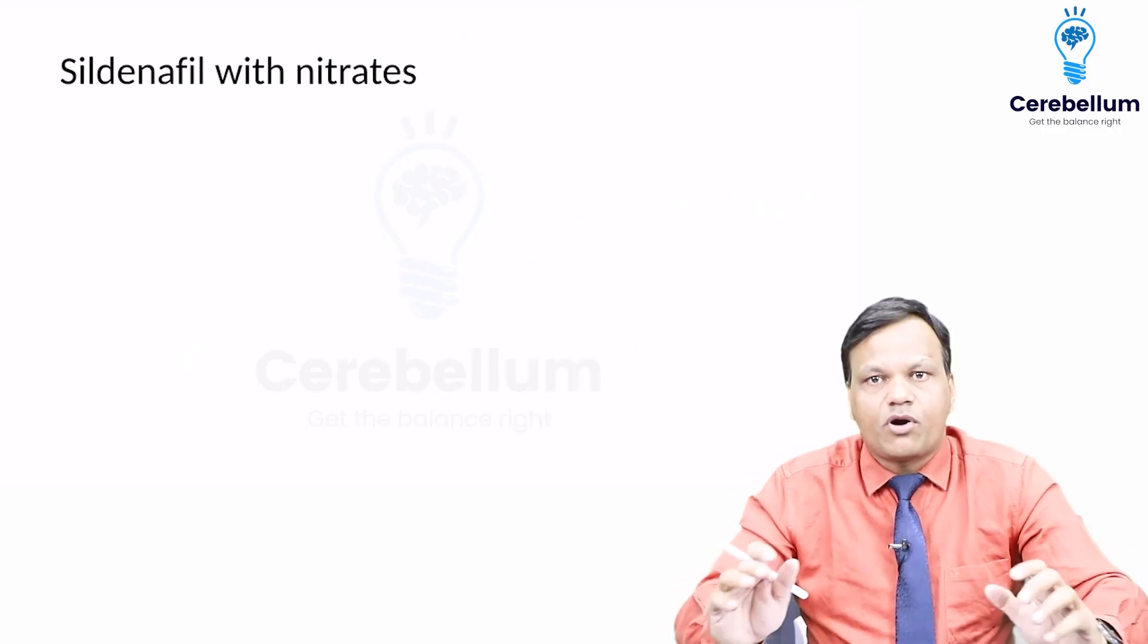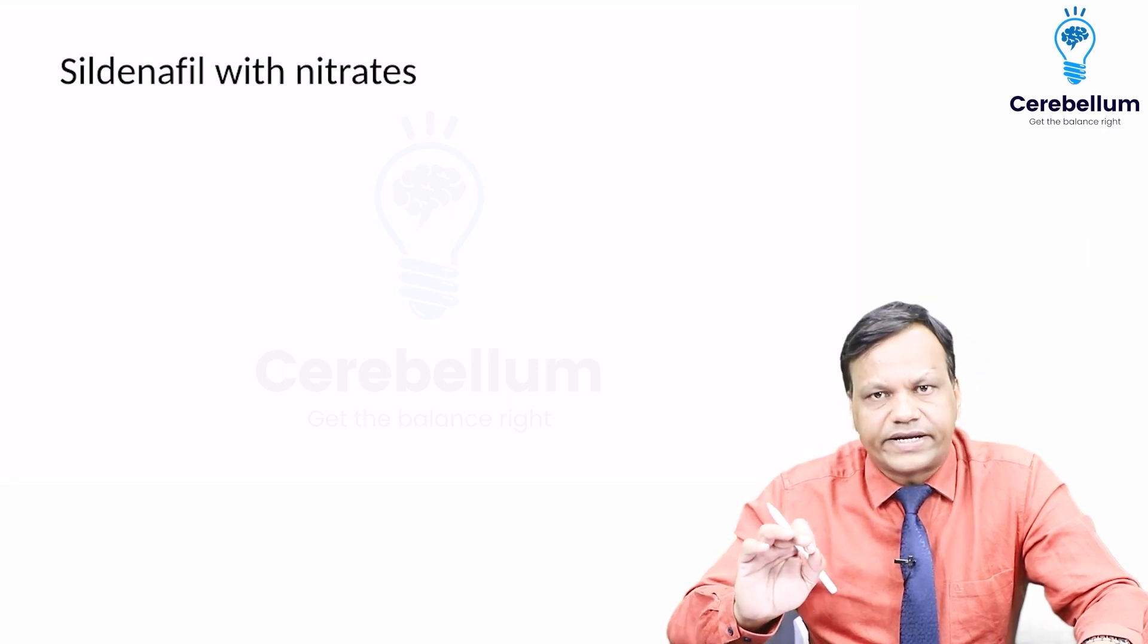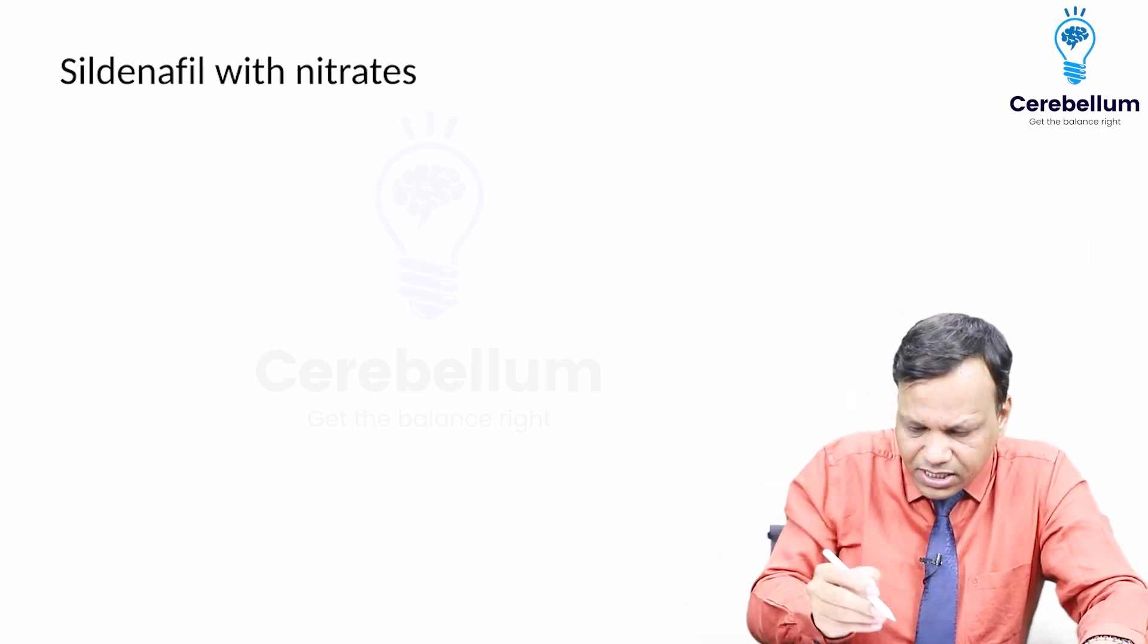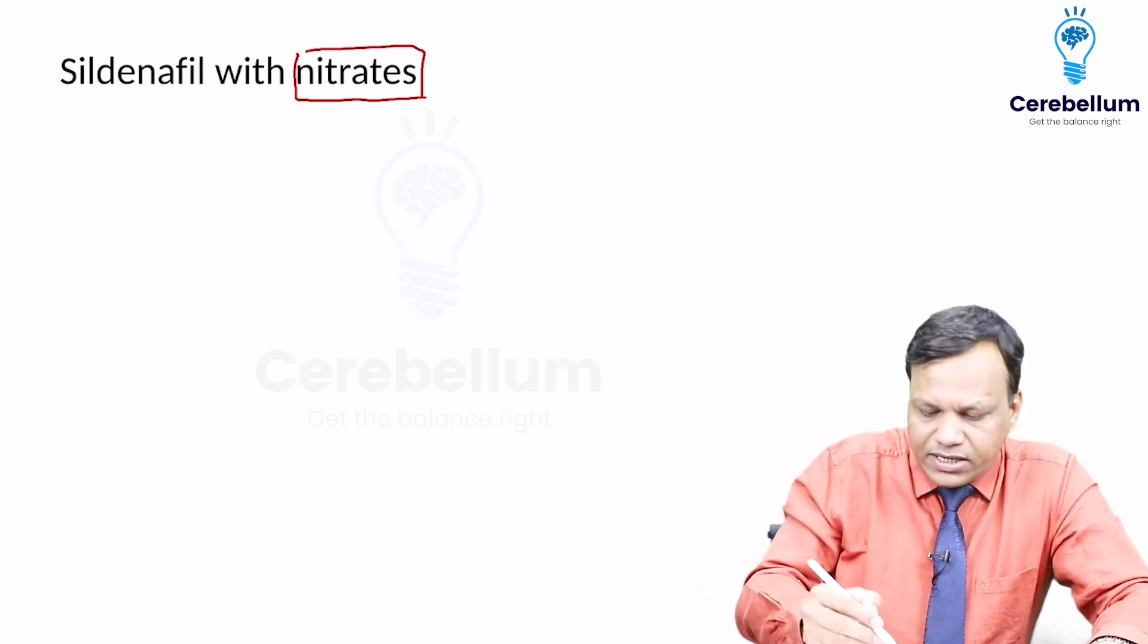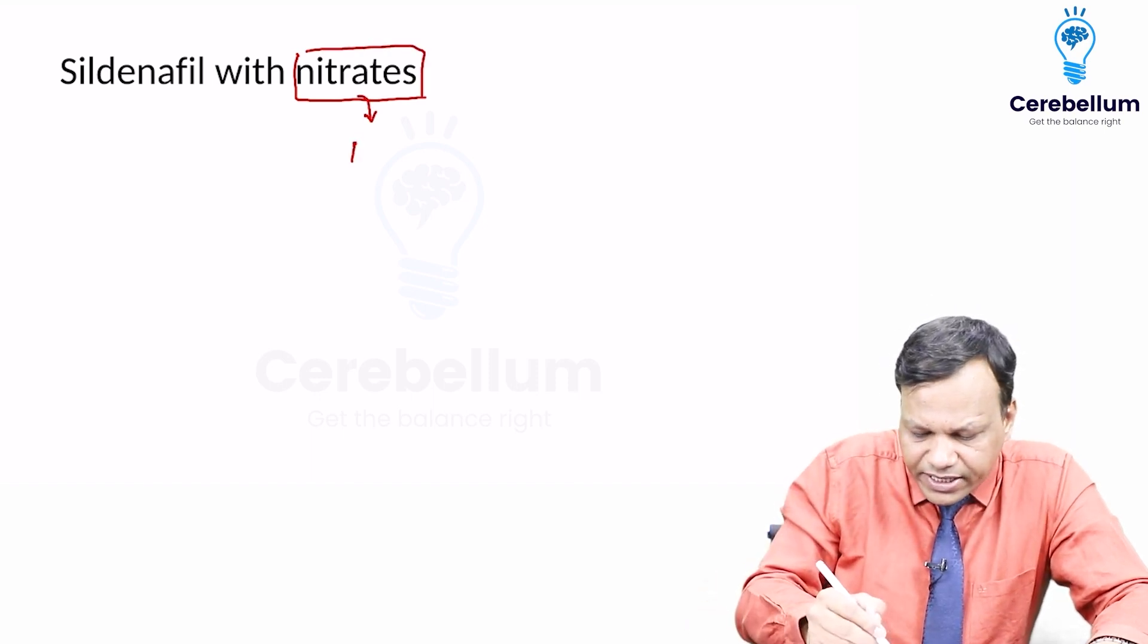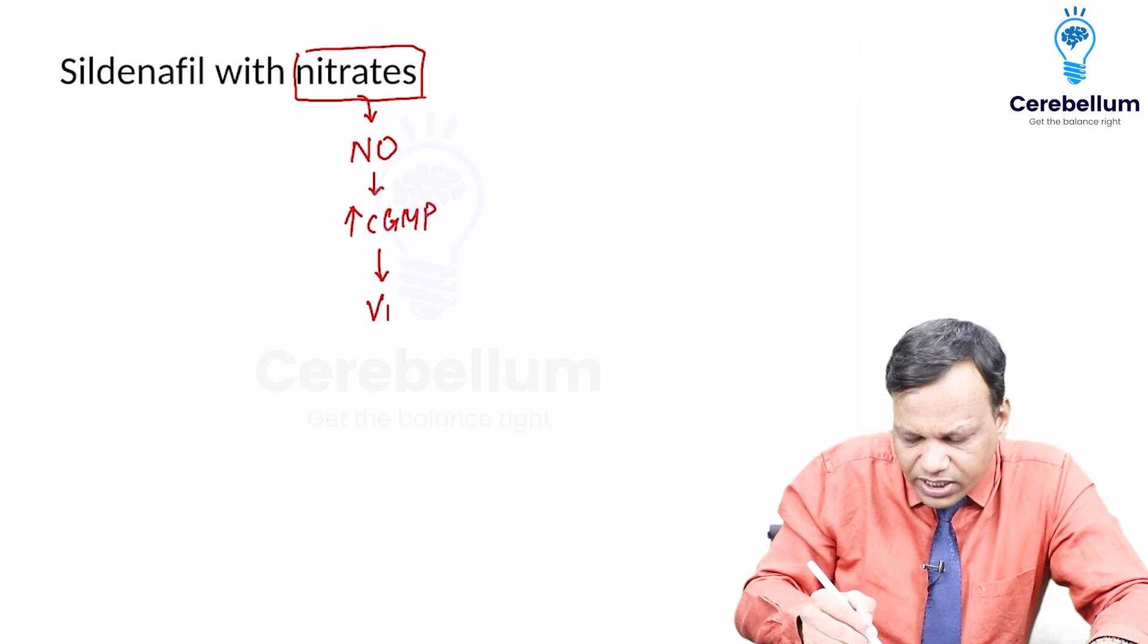Moving to the next very important drug interaction - the interaction of sildenafil with nitrates. Nitrates are used in treatment of angina. Nitrates act by releasing nitric oxide, which increases cyclic GMP, and cyclic GMP causes vasodilation.